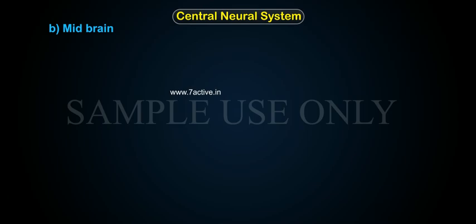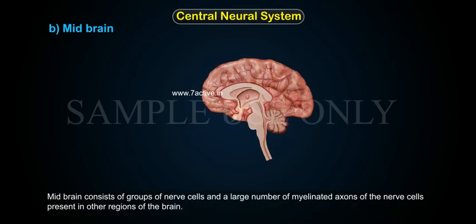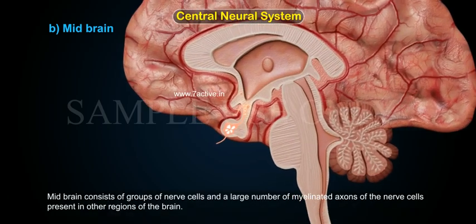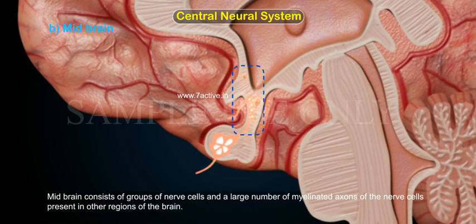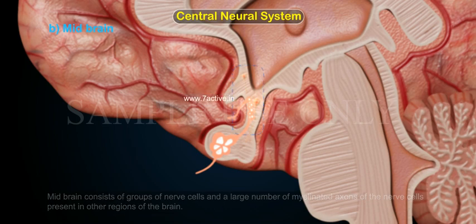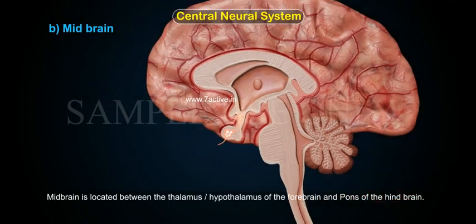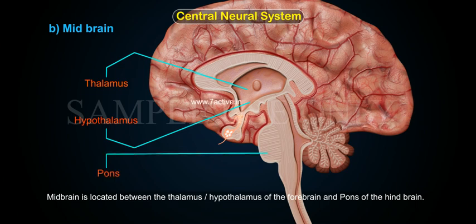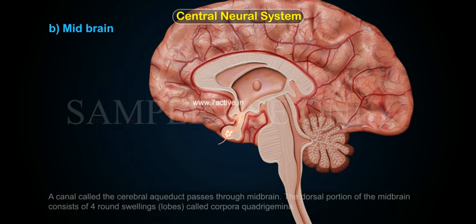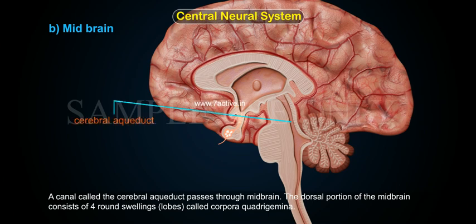B. Midbrain. Midbrain consists of groups of nerve cells and a large number of myelinated axons of the nerve cells present in other regions of the brain. Midbrain is located between the thalamus or hypothalamus of the forebrain and pons of the hindbrain. A canal called the cerebral aqueduct passes through the midbrain.